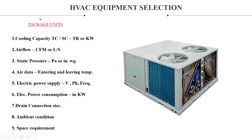Moving on to our next unit — package units. We have cooling capacity, which could be total capacity or sensible cooling load. We will be calculating both — we will learn that thoroughly in coming classes. It is measured in tons of refrigeration or kW. Air flow in CFM or litres per second. Static pressure in Pascal or inch water gauge. Air data covers entering and leaving temperature of the air.